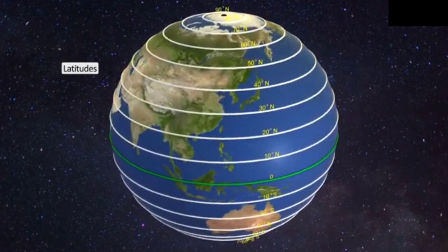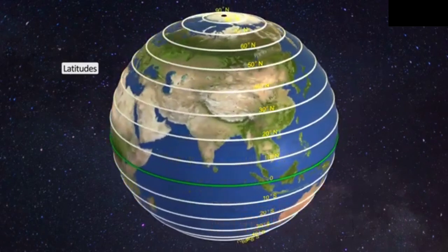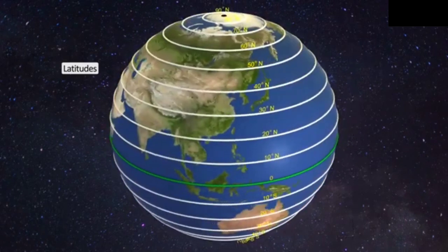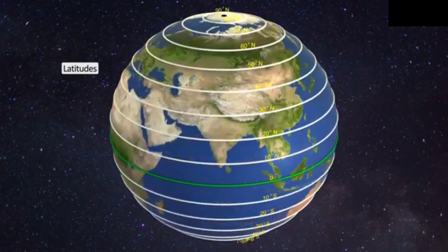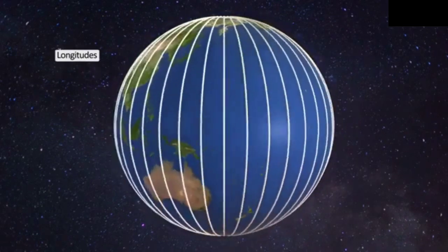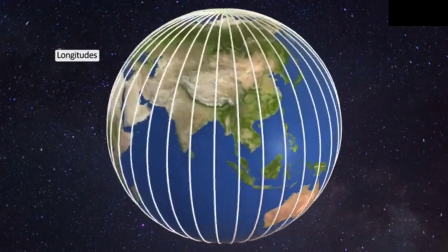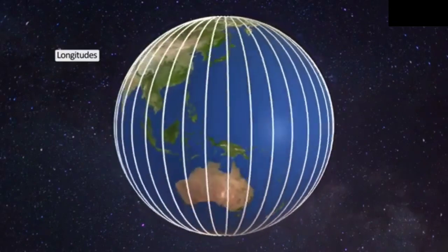Hello everyone, today we are going to discuss the chapter Geographic Grid. In this chapter we will discuss latitude and longitudes. As we know, the horizontal lines drawn east to west on the globe are known as latitudes, and the vertical lines drawn from north pole to south pole are known as longitudes.